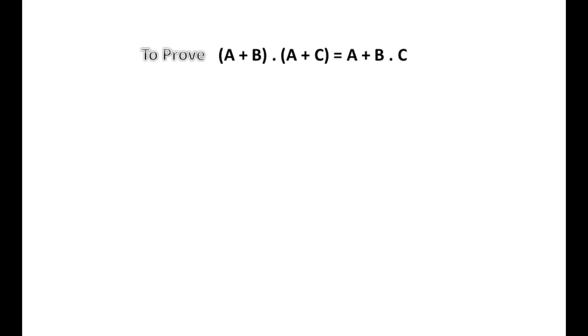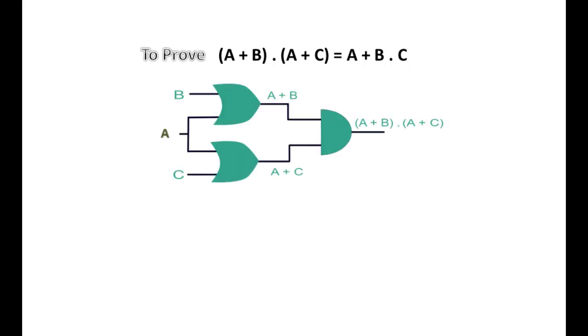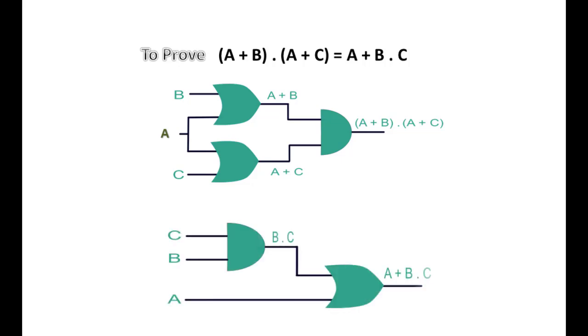Here is another example. On the left side we have: (A or B) AND (A or C) equals A AND (A or B AND C). To implement the left-hand side we require three gates — this is what the implementation looks like using logic gates. For the right-hand side we require just two gates. This is how the equivalence works and how we actually reduce the number of gates.